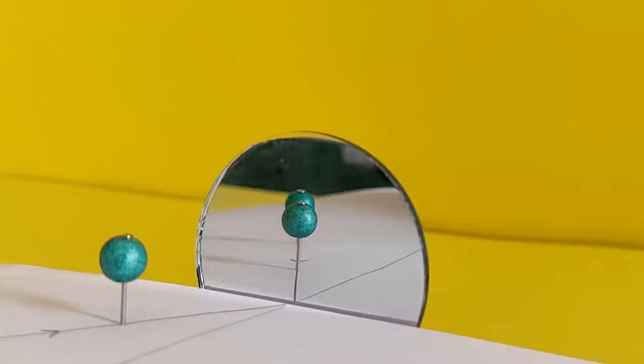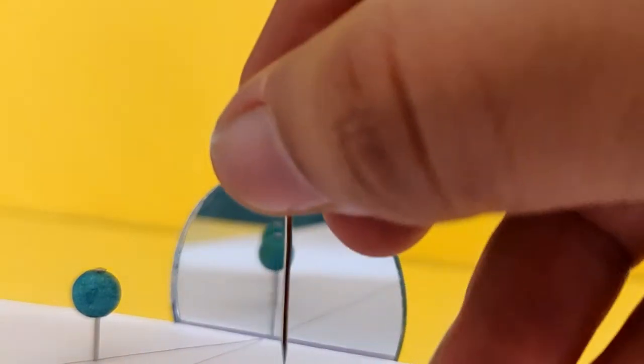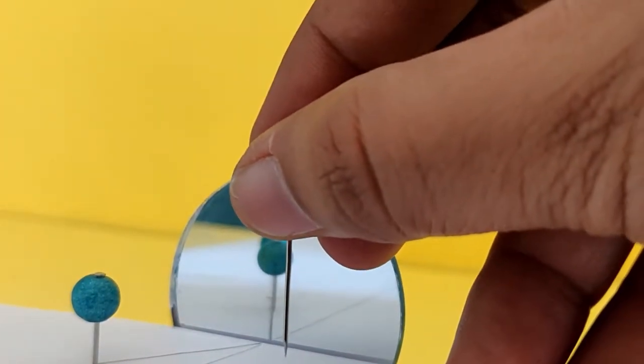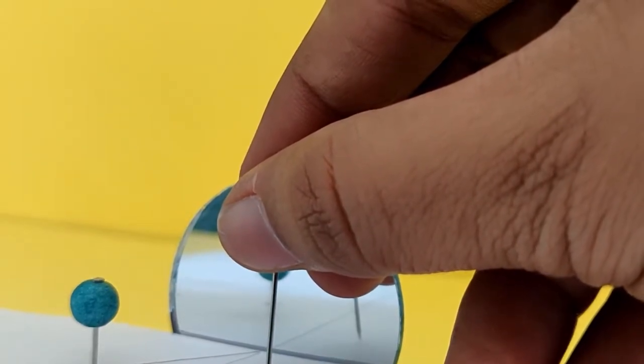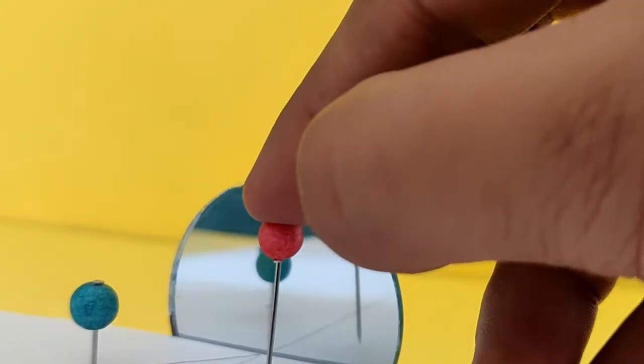With one eye closed, look into the mirror to see where the reflection of the two styrofoam balls on the incident ray align in a straight line. Push two ball pins into the thermocall board such that they seem to align with the reflection of the two pins on the incident ray.